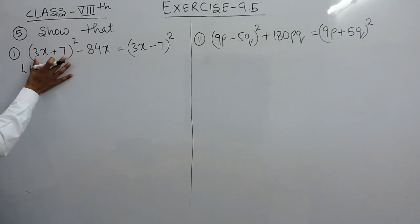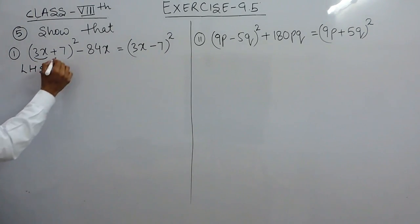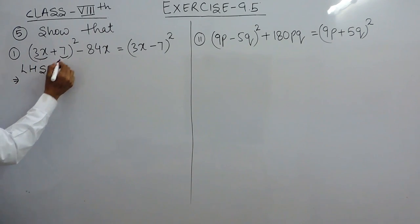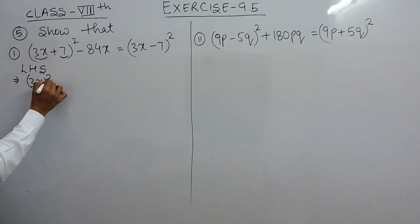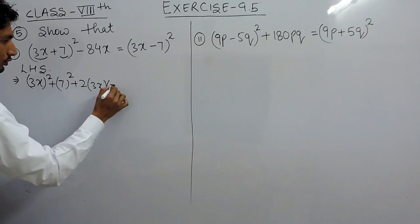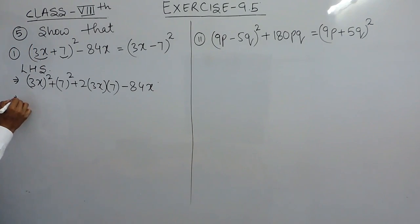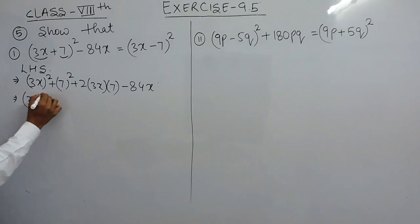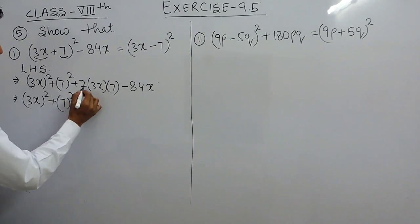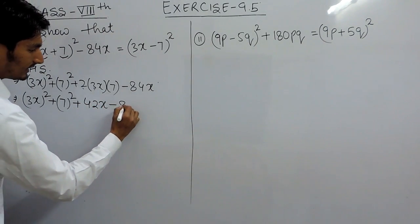On the left hand side it is given that (3x + 7) whole square minus 84x. If I consider 3x as 'a' and 7 as 'b', then this is (a + b) whole square. This can be expanded as a² + b² + 2ab, so that is (3x)² + 7² + 2×3x×7, and minus 84x remains as it is. This gives 9x² + 49 + 42x minus 84x.